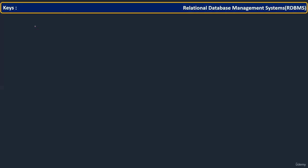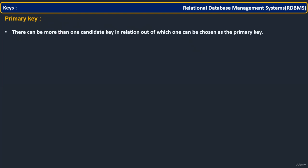Now let us see our next key, that is primary key. If you understand candidate key, it is just a matter of few seconds to understand what is primary key. So you can have one or more than one candidate key. Out of all these possible candidate keys, we are just selecting one as a primary key. That means every primary key is unique plus not null.